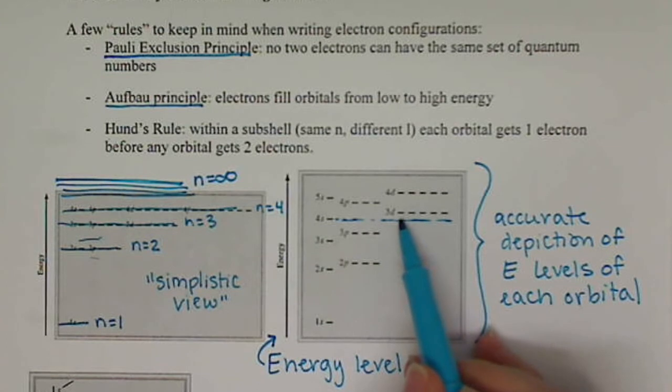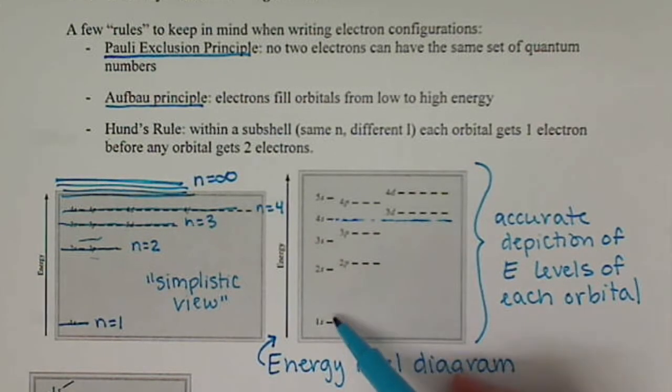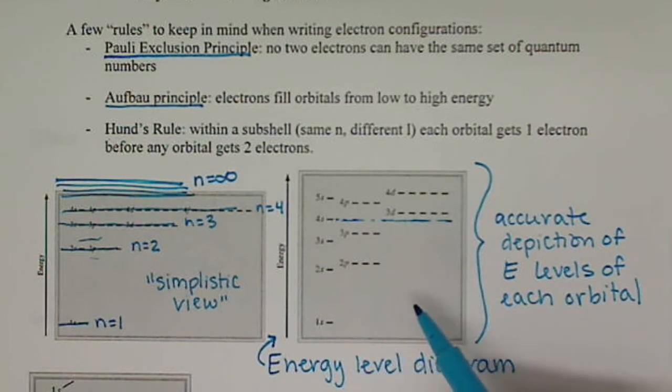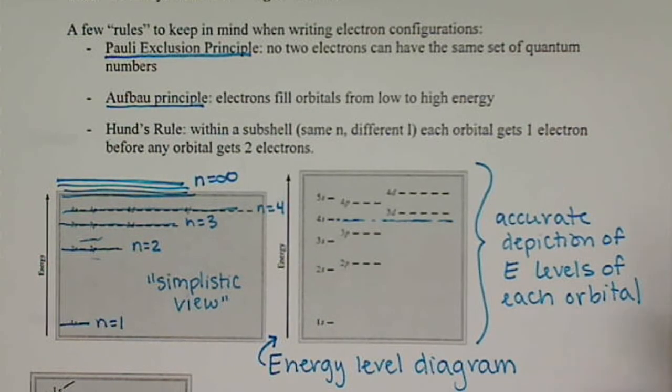Then our d orbitals have five orientations, so they're going to get five lines. Each line, each orbital can have two electrons.